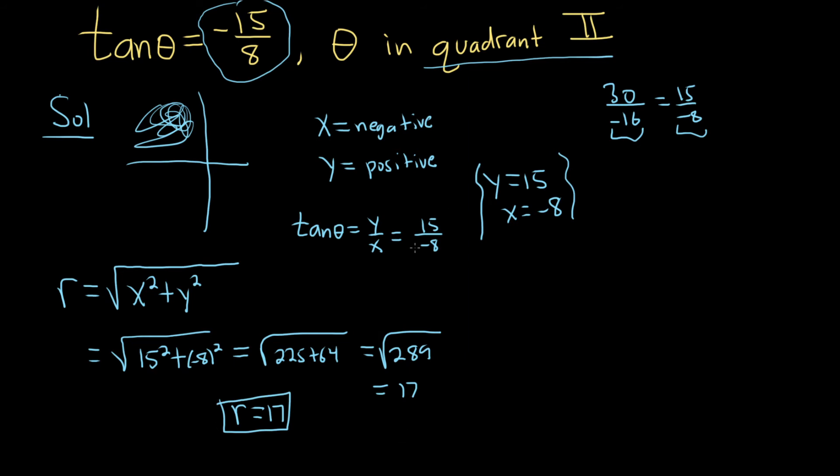All right. So now that we have r and we have x and y, we can write down all of the other answers. So one of the answers is tangent of theta equals negative 15 over 8. And then another simple answer that we can get is the cotangent. We can get that one just by flipping this answer because cotangent is the reciprocal. So it's negative 8 over 15.